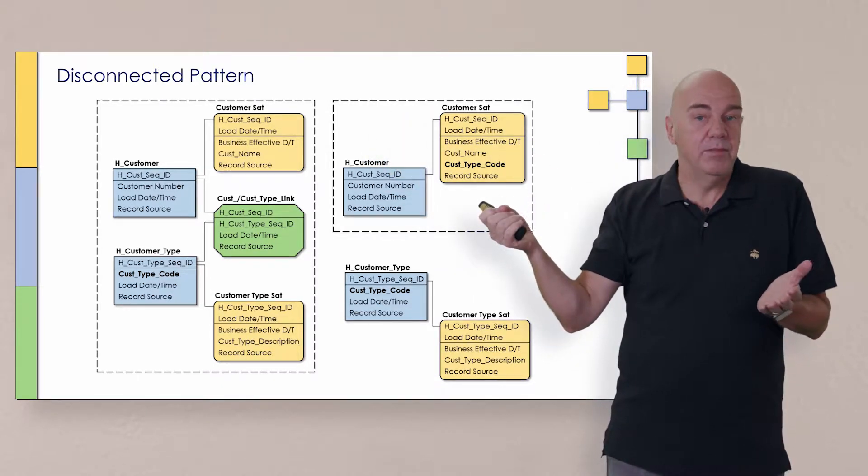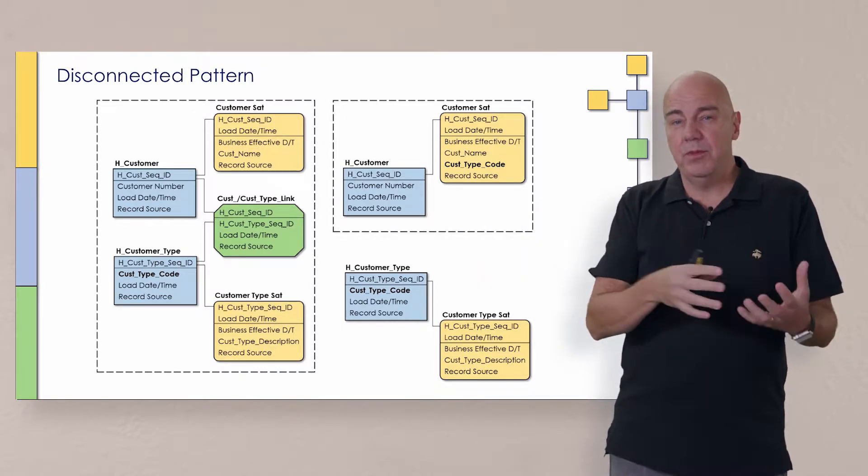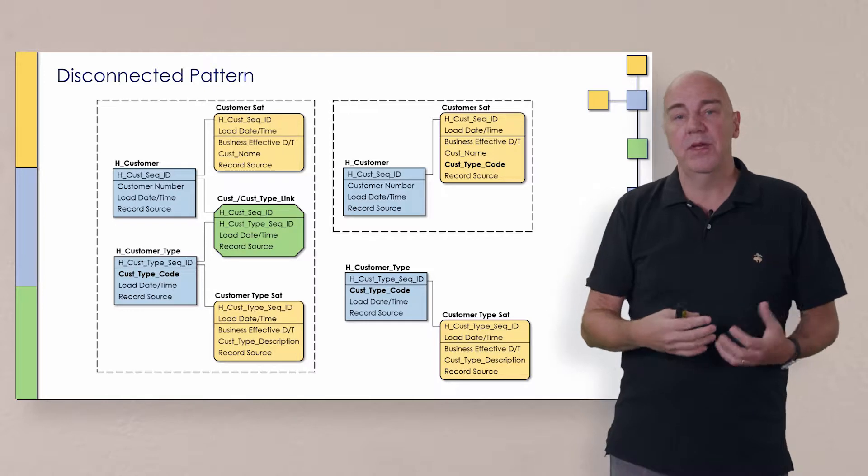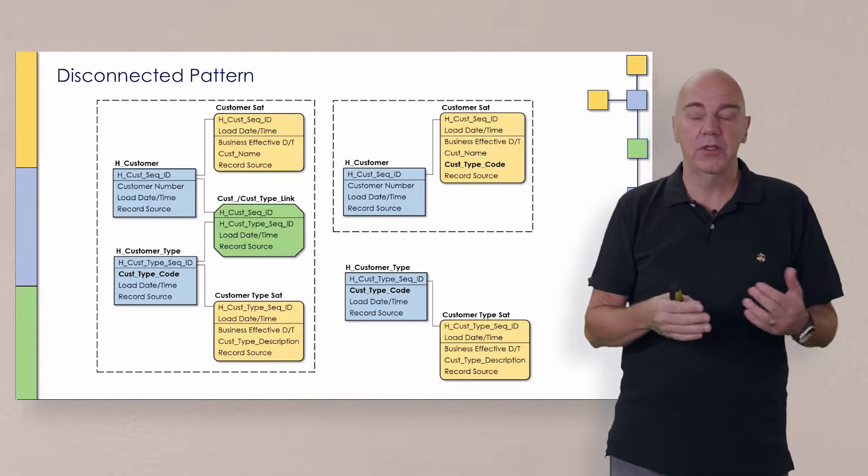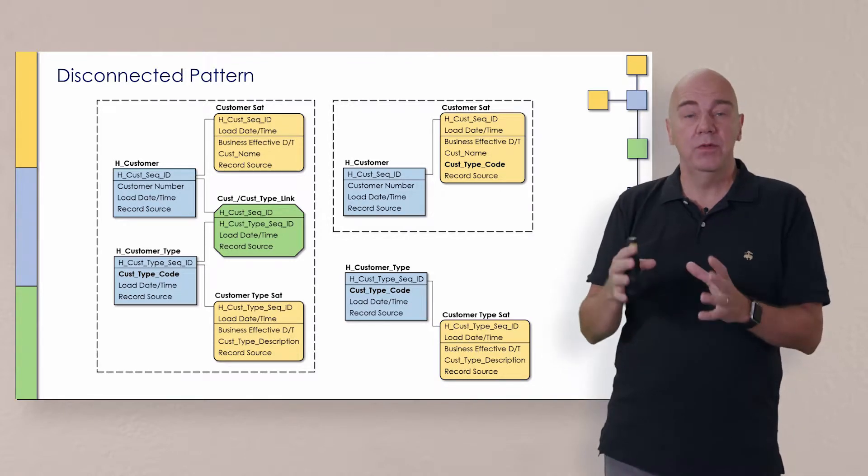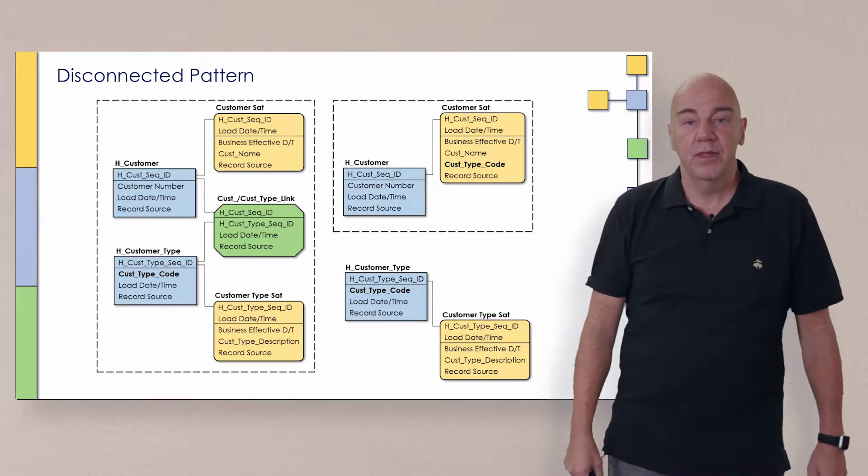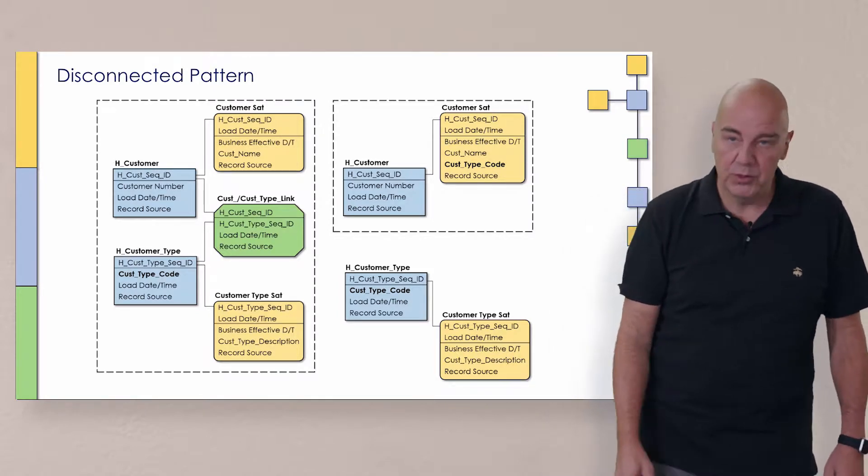So now what's happening is that the hub says, hey, I'm a customer, and oh, by the way, here is my type. I am medium, or whatever the type is. Now the table itself that kept information about the type codes, we may want to control those domain values, make sure we keep them in sync once in a while. So we may want to keep it in the warehouse, but we keep it in a disconnected section. Let me take you to the whiteboard, and I'll show you what we're talking about.